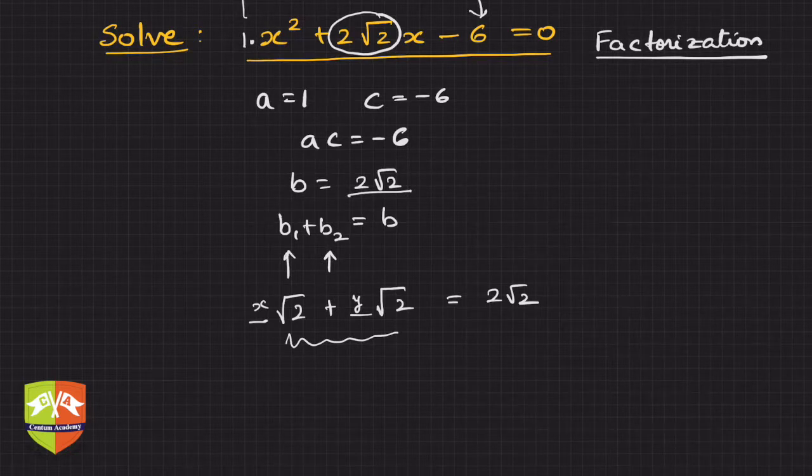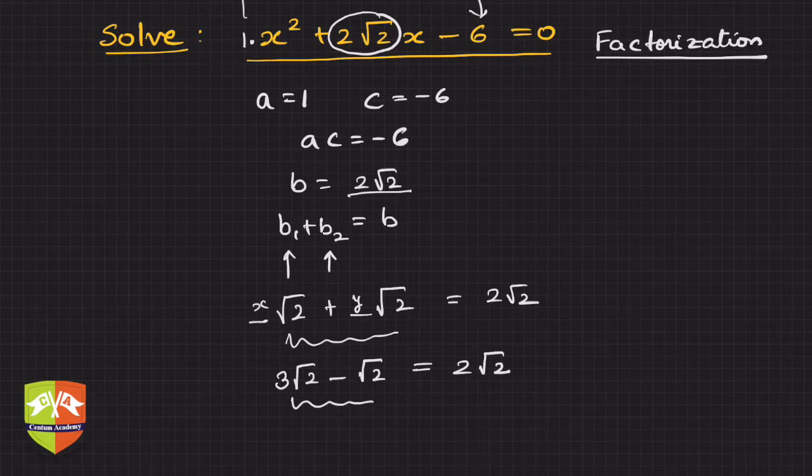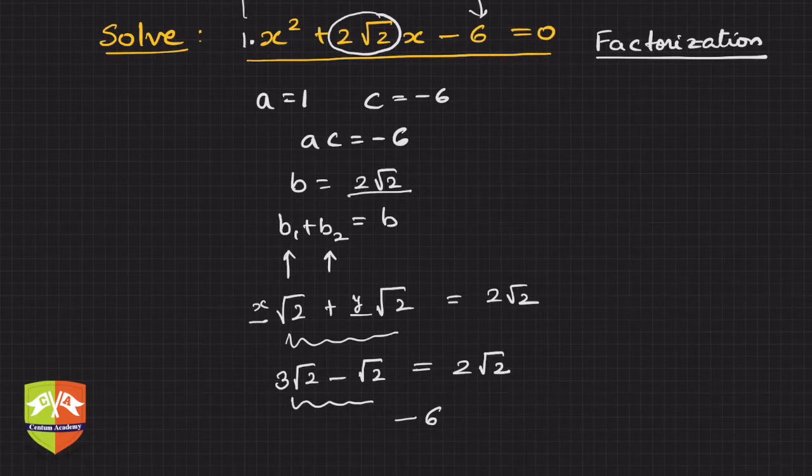We can say that it is nothing but 3√2 - √2. If we see, this is clearly equal to 2√2, and the product also is, if you multiply these two, you will get -6.